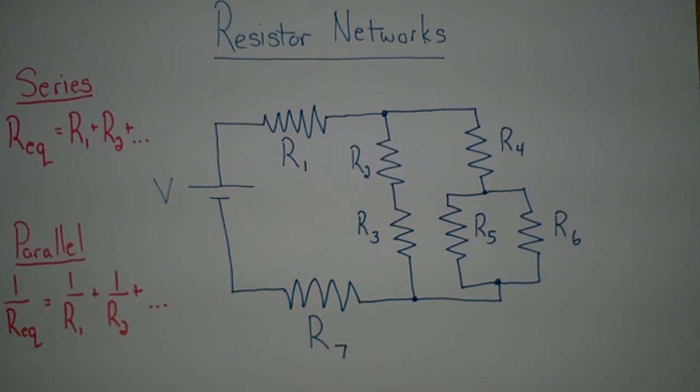If we consider the resistor network in front of us, we can see it is made up of seven resistors. Our first two resistors, R5 and R6, are in parallel with each other, which means we can simplify it to one resistor. 1 over RE1 equals 1 over R5 plus 1 over R6.